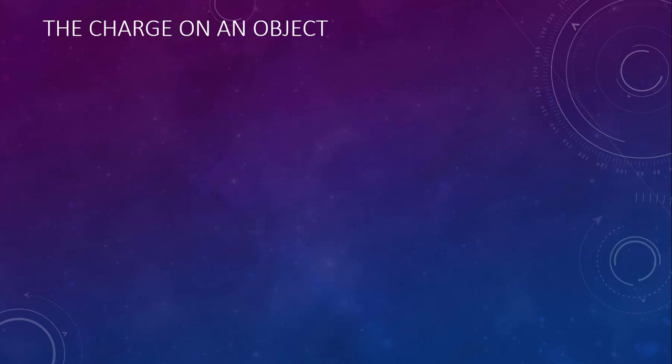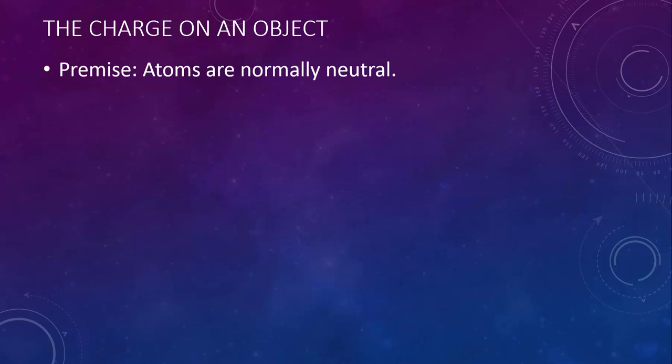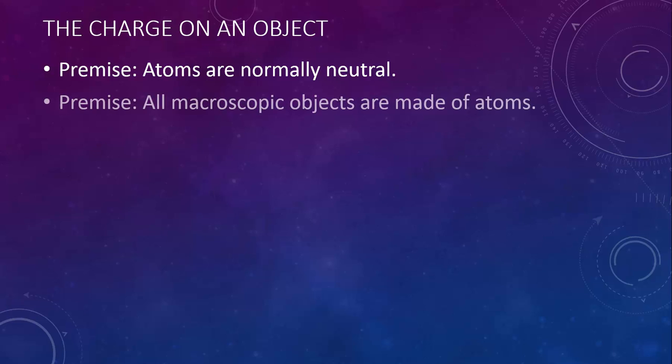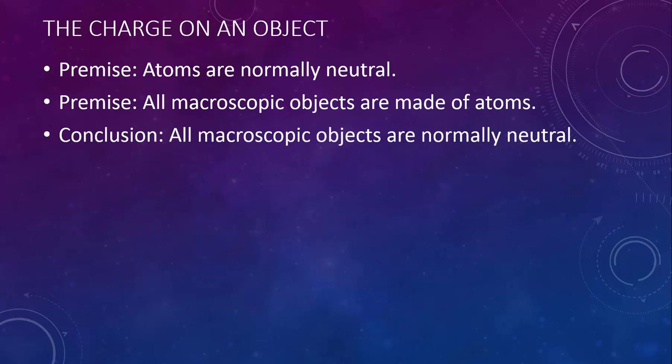The next thing we should discuss is the charge on an object. First, atoms are normally neutral — they have the same number of protons and electrons. Another basic fact is that all macroscopic objects are made of atoms. Macroscopic is the opposite of microscopic: macroscopic objects are things you can see with the naked eye. So all macroscopic objects are normally neutral.